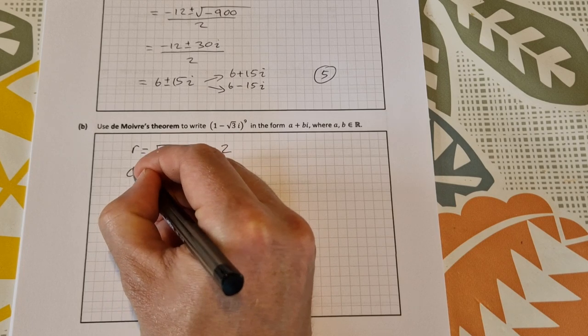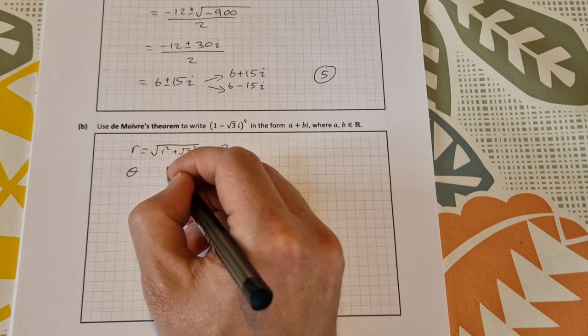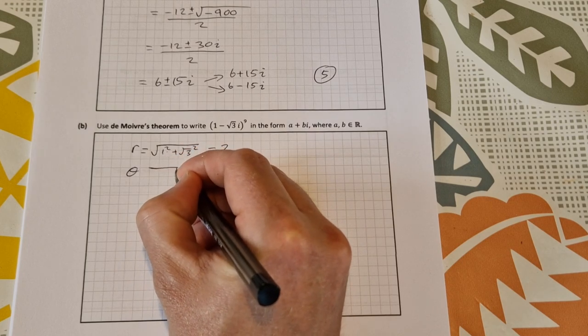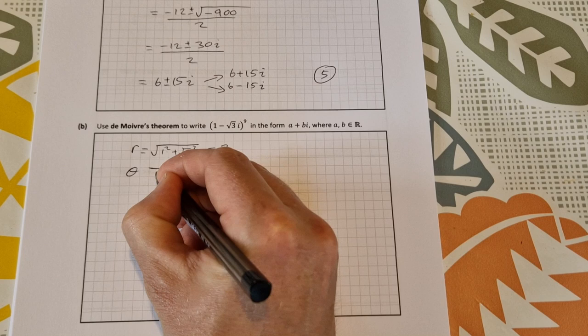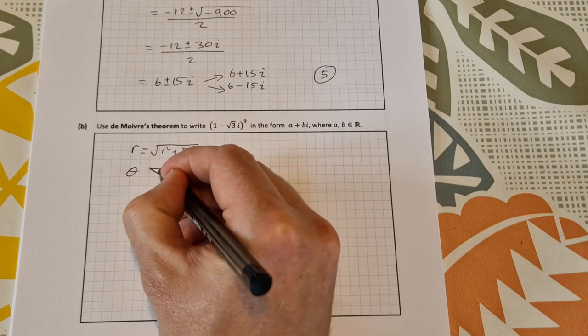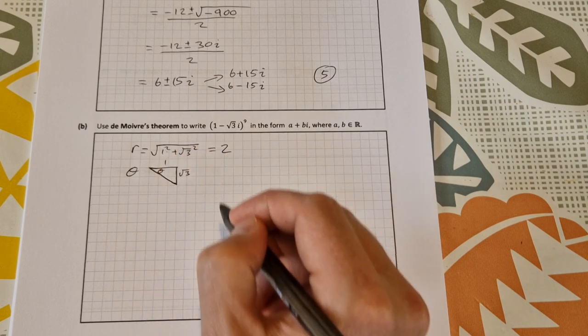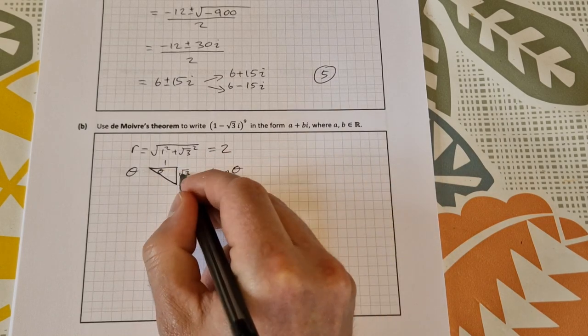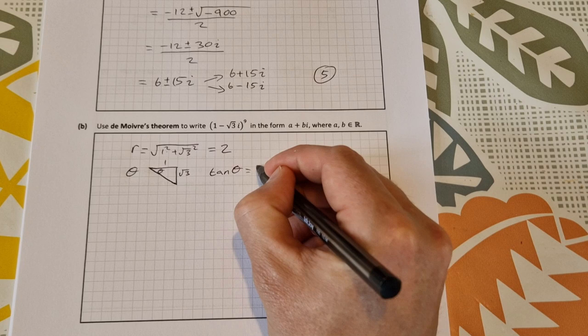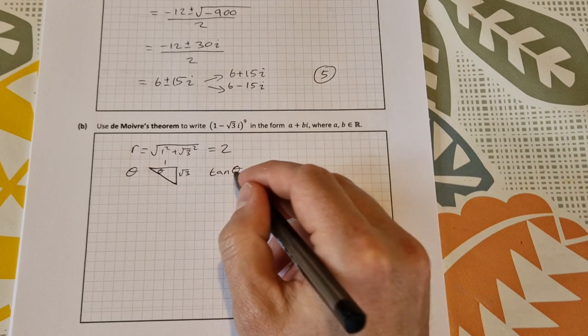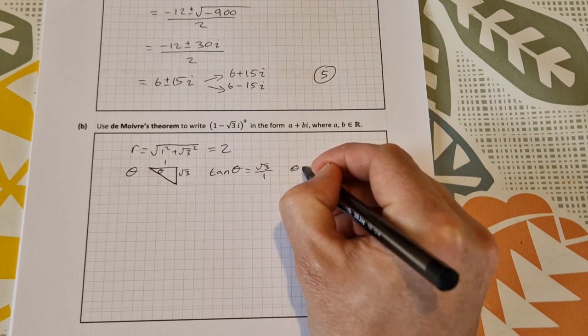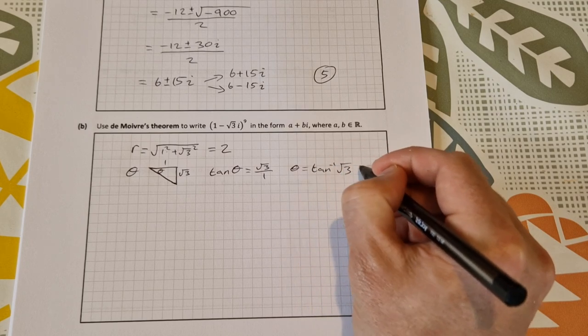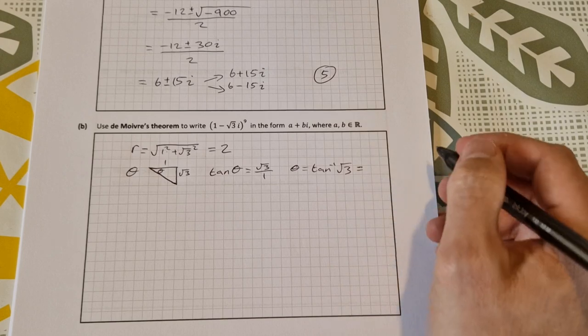For theta then, I like to draw a little triangle. So I'm just going to go across 1 and down root 3. It doesn't have to be to scale, but we're looking for this angle here, theta. So 1 root 3. So we can get the tan of theta is equal to the opposite over adjacent, so that's equal to root 3 over 1. So then, to find theta, theta is equal to tan inverse of root 3. So theta is equal to pi over 3.